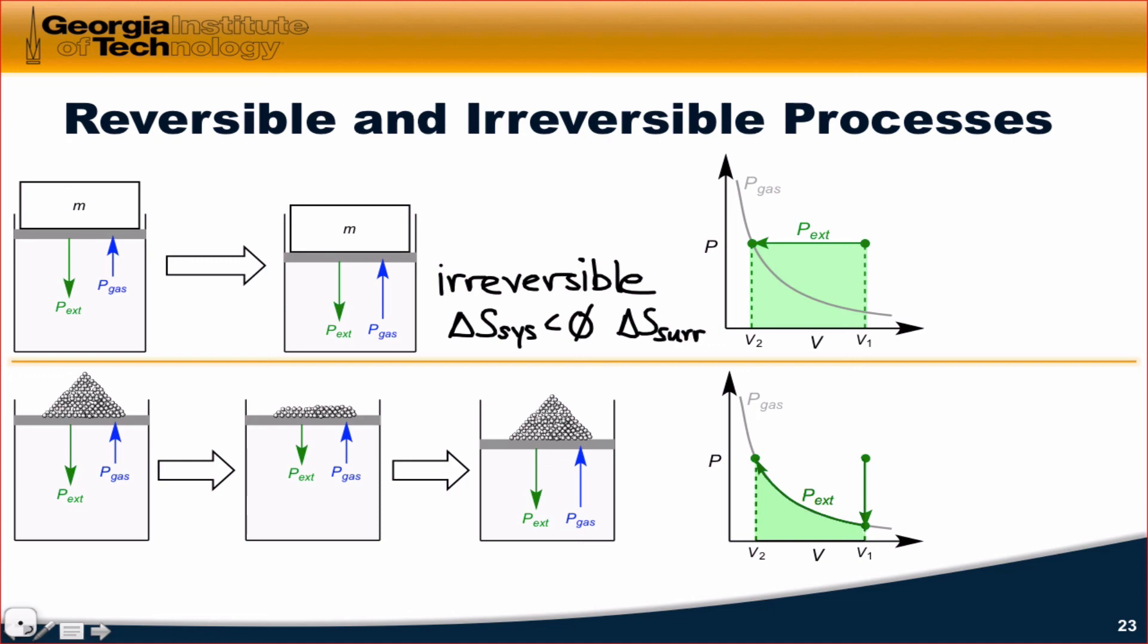In fact, the magnitude of delta S surroundings must be greater than delta S system such that overall, delta S for the universe is greater than zero. This is the hallmark of irreversible processes. They have entropy changes of the universe that are greater than zero.